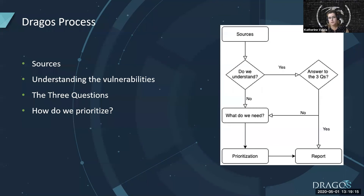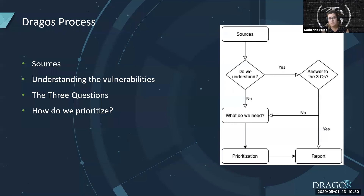Next I want to go into our Dragos process and how we assess vulnerabilities. First, triggered by our sources, we collect whatever information we need to understand the vulnerability completely. We answer the three questions and then we prioritize them. All this gets fed into our report, our customers, and then into the platform as well.